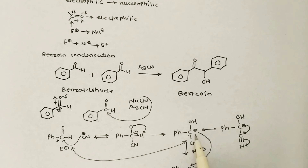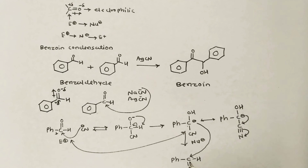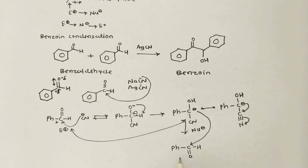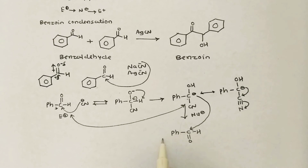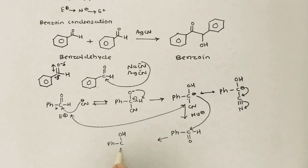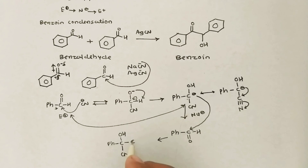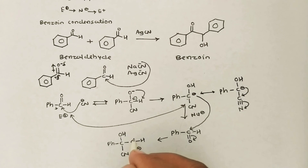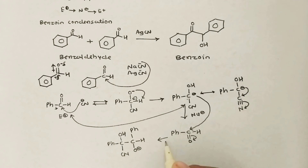This nucleophilic carbon naturally attacks over the carbonyl carbon of the other aldehyde molecule. After that, the remaining steps take place. Carbon-carbon bond formation occurs, giving Ph–C(OH)(CN)–C(O⁻)(H)–Ph. This step is also reversible.